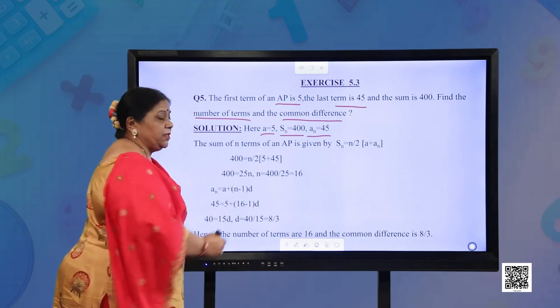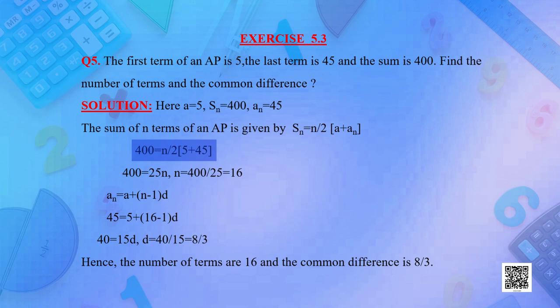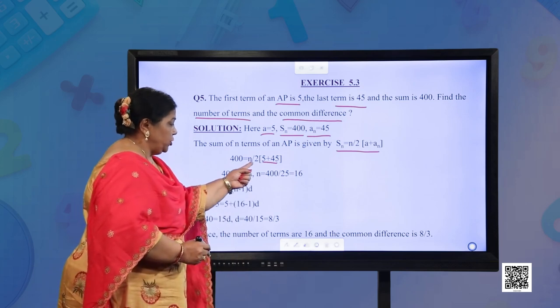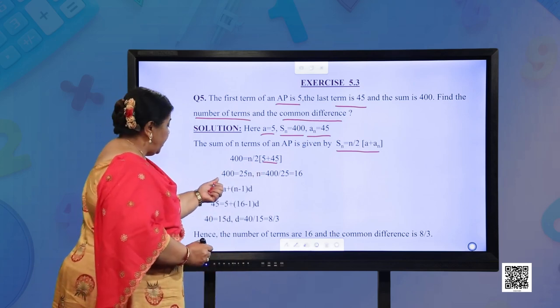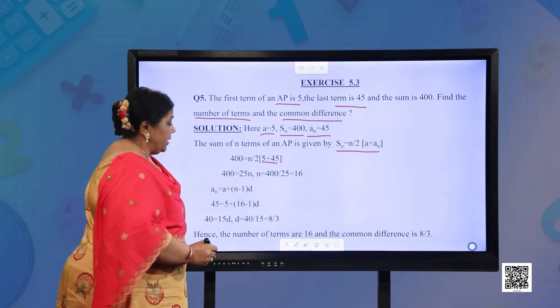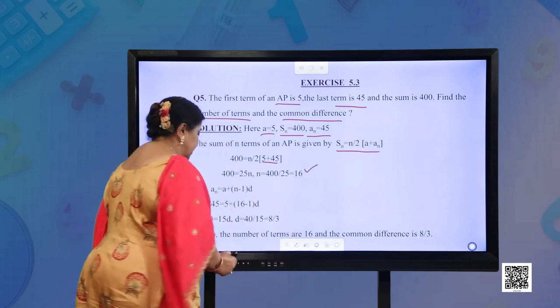The sum of n terms of the AP is given by Sn = n/2 × (A + An). Substituting the values: 400 = n/2 × (5 + 45). Now 5 + 45 = 50, and 50/2 = 25. So I get 400 = 25n, which gives n = 16.